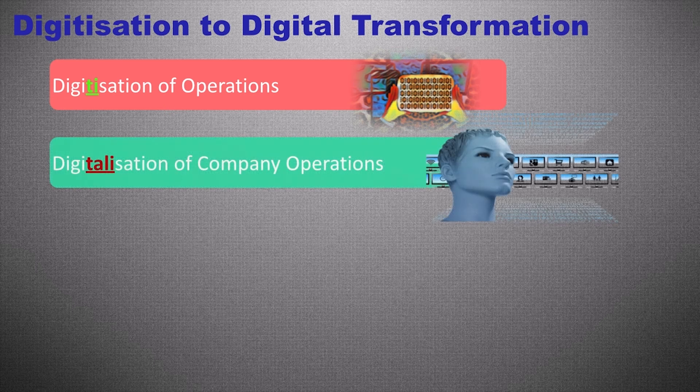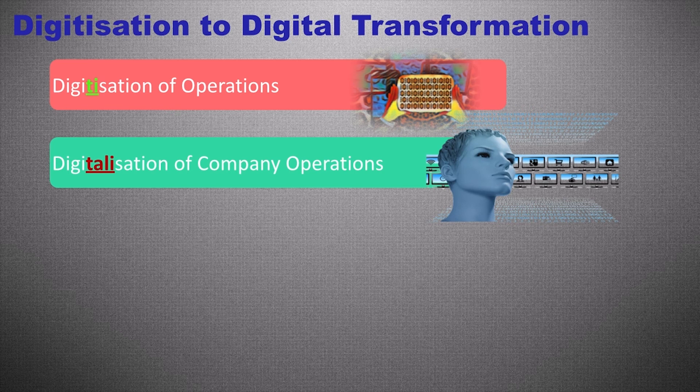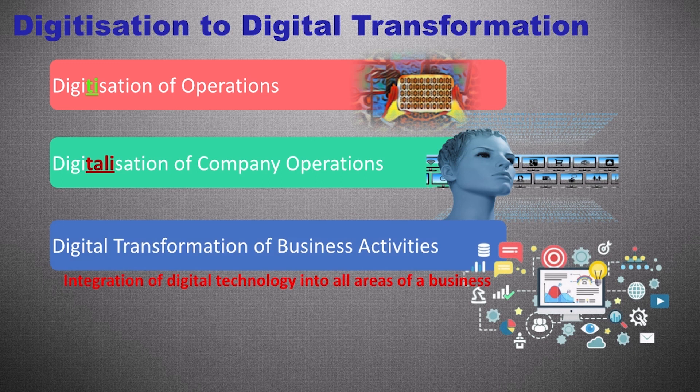Second step: digitalization of company operations, which is an organizational or business process. This has resulted in new processes like automation, manufacturing execution system or MES, ERP, PLM, electronic payments, video conferencing, e-learning, paperless offices, so on and so forth. The third step being the digital transformation.